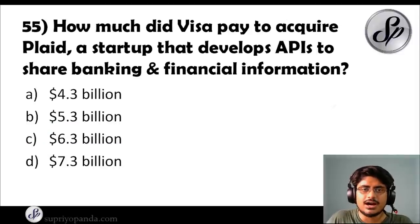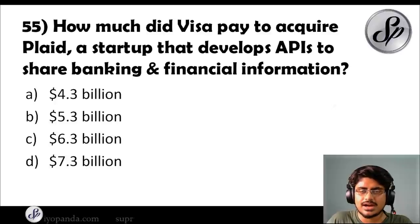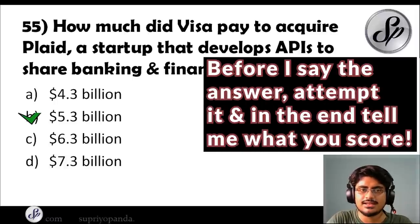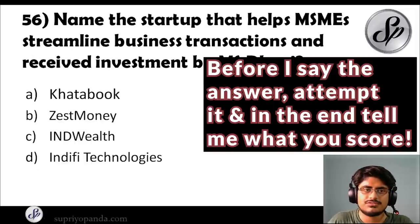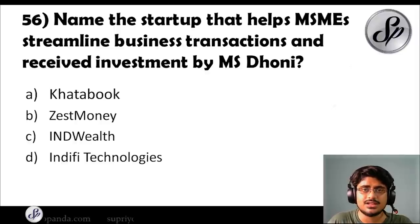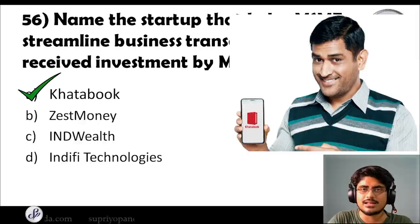Question fifty-five: how much did Visa pay to acquire Plaid, a startup that develops APIs to share banking and financial information? The answer is 5.3 billion dollars. Question fifty-six: name the startup that helps MSMEs streamline business transactions and has received investment from MS Dhoni. The answer is Khata Book.